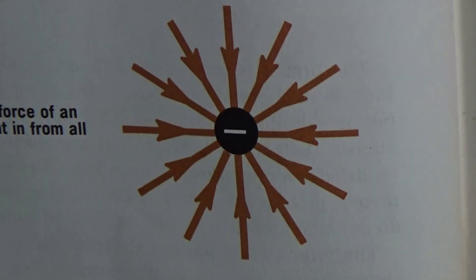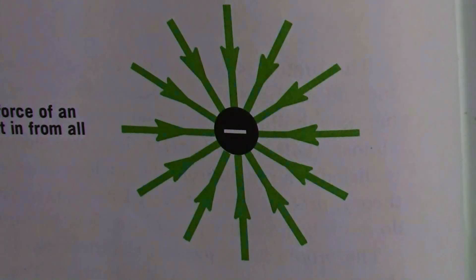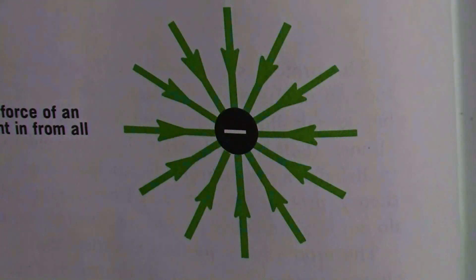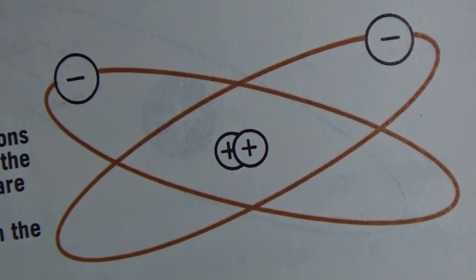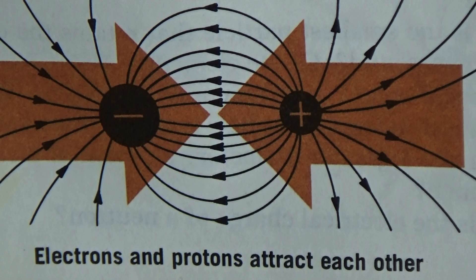The electron orbits about the nucleus, is negatively charged, and produces negative lines of force that travel into the electron from all directions. These positive and negative charges are governed by the law of attraction. Like charges will repel each other, and opposite charges will attract each other.